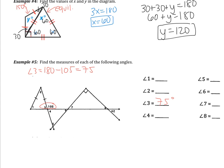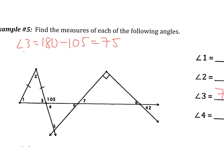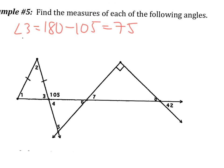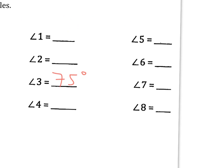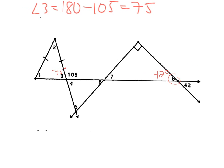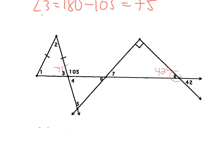I'm going to zoom in a little bit so that I can write more on this. I'm going to help you with one more. Next, I'm going to help you with angle 8. I know that angle 8 and the 42 are vertical, so angle 8 is going to be 42 degrees. Right now I would like you to pause the video and find the remaining angles on your own. When you are finished, come back and I will go over the problem with you.